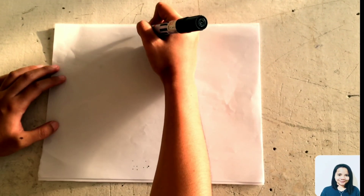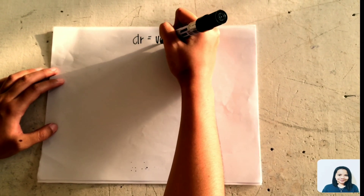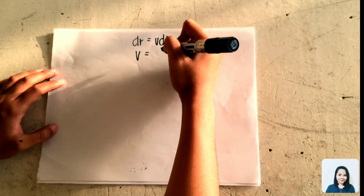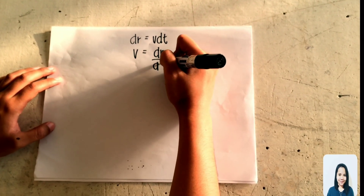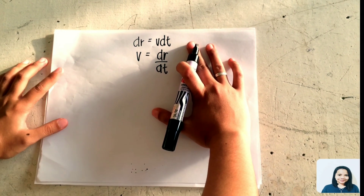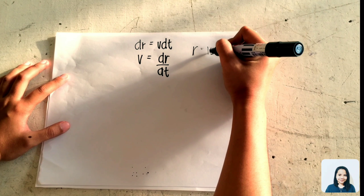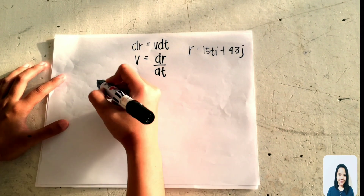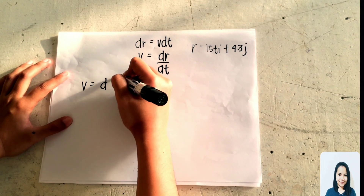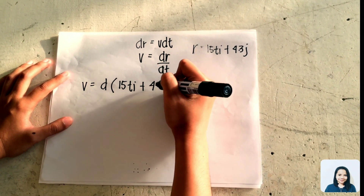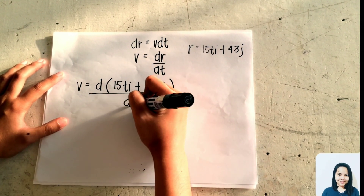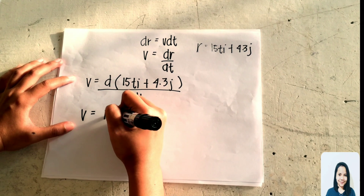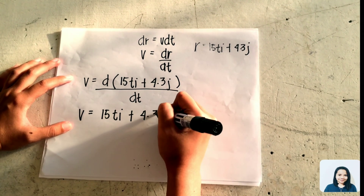Isasolve na natin yung problem gamit ang formula DR equals V DT. Para makuha natin yung velocity, kailangan natin i-derive itong formula. I-divide mo lang siya sa DT, magiging DR over DT. Since ang value ng R mo ay 15T i plus 4.3 j, pwede mo na siyang i-substitute at dumiretso sa derivatives. V equals D(15T i plus 4.3 j) over DT.